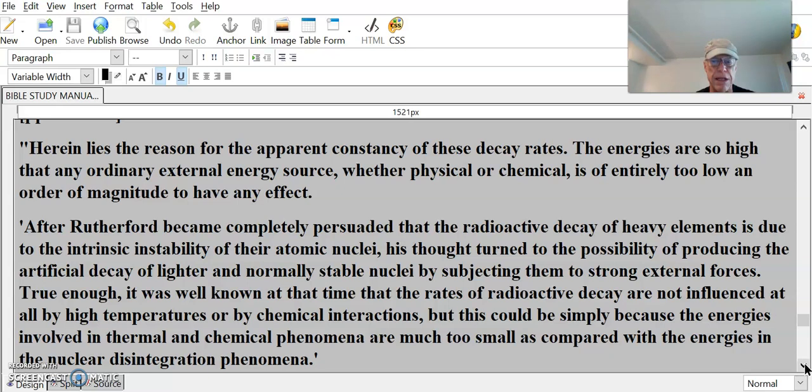After Rutherford became completely persuaded that the radioactive decay of heavy elements is due to the intrinsic instability of their atomic nuclei, his thought turned to the possibility of producing the artificial decay of lighter and normally stable nuclei by subjecting them to strong external forces. True enough, it was well known at that time that the rates of radioactive decay are not influenced at all by high temperatures or by chemical interactions, but this could simply be because the energies involved in thermal and chemical phenomena are much too small as compared to the energies in the nuclear disintegration phenomena.